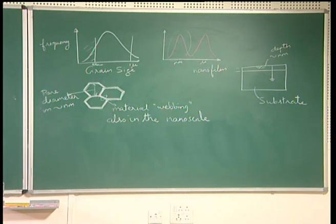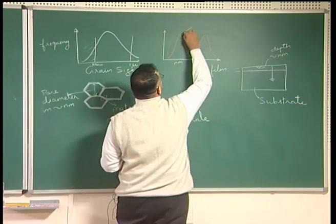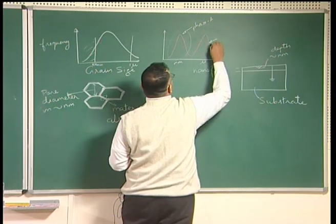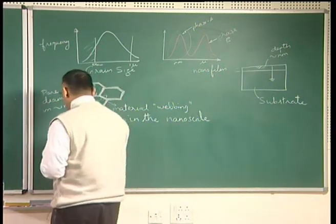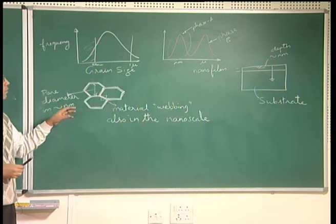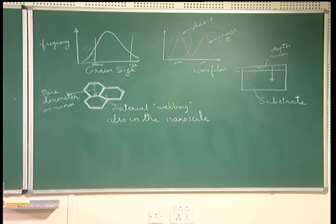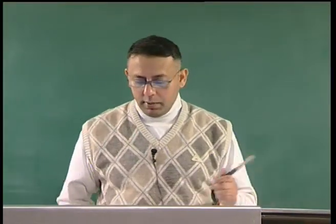It could so happen that in a multi-phase material, one phase has a distribution in the nano regime and another phase has a different distribution. As long as we understand which entity in the collection is in the nano scale, we can identify where enhancement or change in properties is coming from.